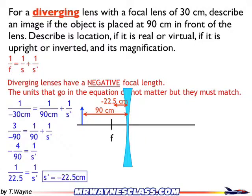So the image appears at negative 22.5 centimeters, on the same side as the object. Because s prime is negative, that makes the image virtual — it appears on the same side as the object itself.